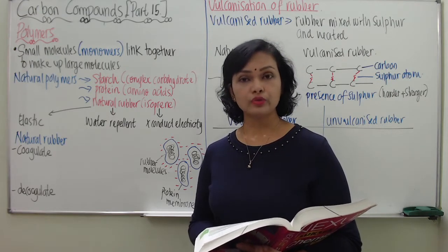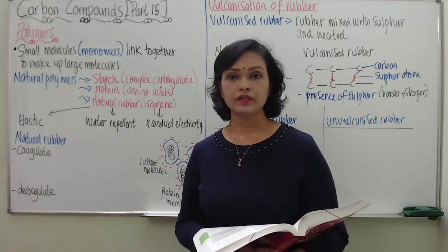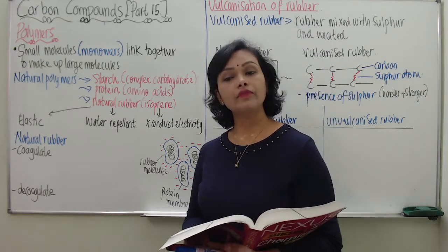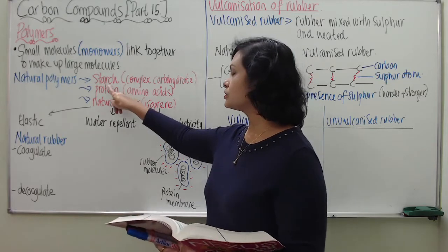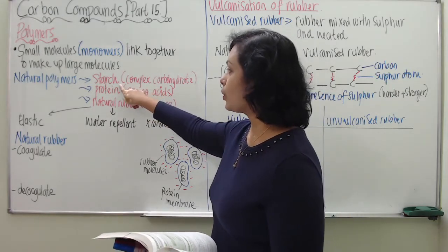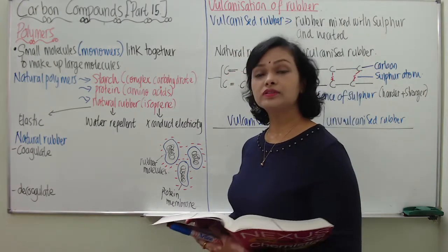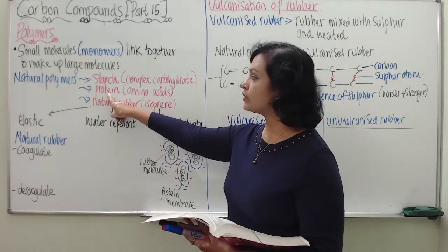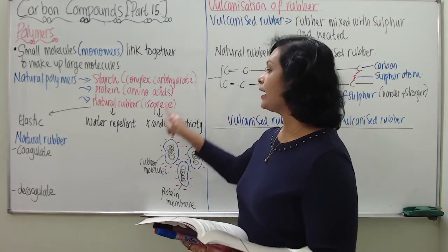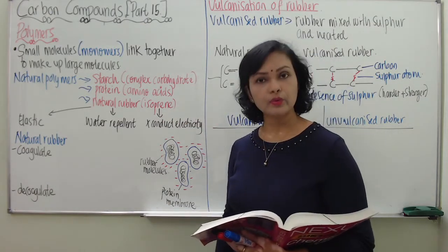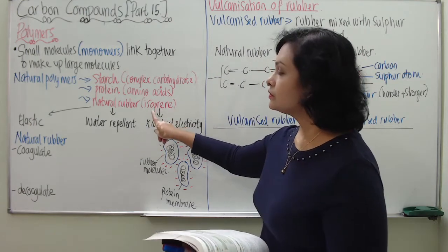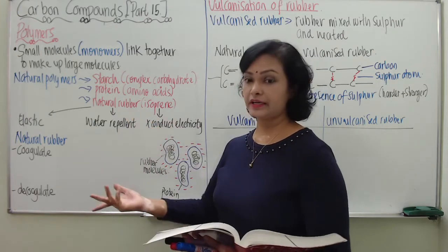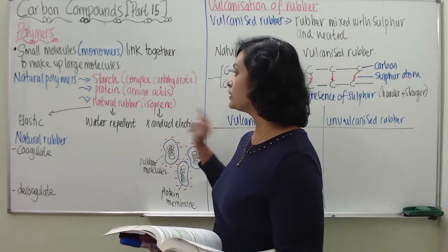These are all synthetic polymers produced by human beings for human usage. Now I would like to highlight a few examples of natural polymers. Starch is a polymer and the monomer of starch is complex carbohydrate. Protein is an example of a natural polymer and the monomer is called amino acids. And lastly, the main discussion of today's part 15 is natural rubber. Natural rubber is indeed a natural polymer and the monomer is called isoprene.